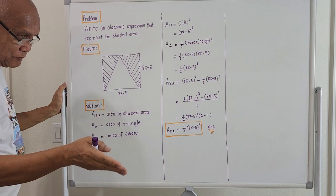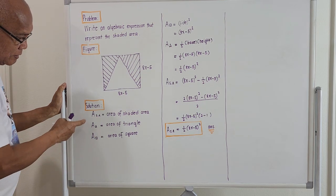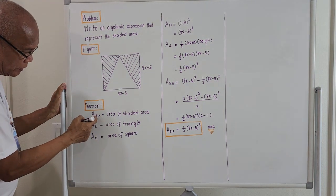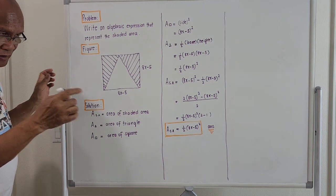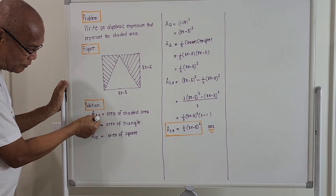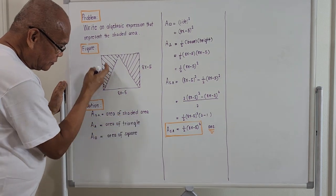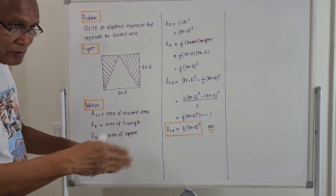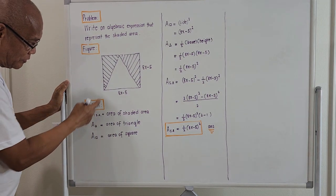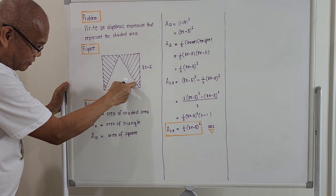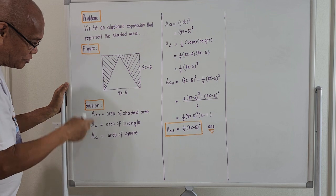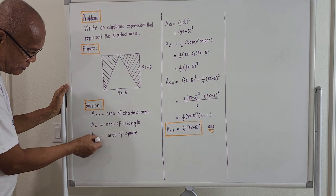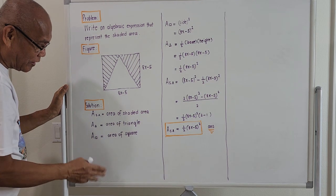For the solution, I will use the notation: Area with subscript SA represents the shaded area. The area of the shaded region equals the area of this portion here. We also need to bring out the representation — the area of the square with subscript 'square' and the area of the triangle.